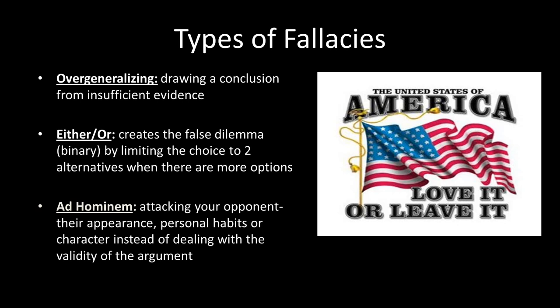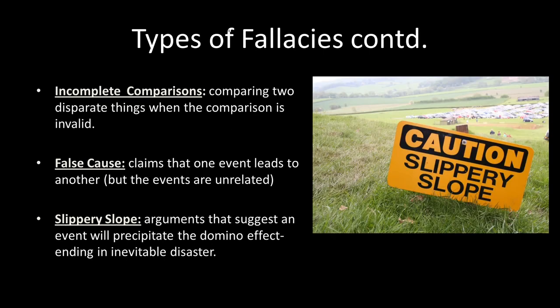The ad hominem fallacy — Latin for 'against the man' — means that instead of attacking your opponent's ideas, you attack them directly, targeting something about the person rather than the validity of their argument. The fallacy of incomplete comparison involves comparing two disparate things when the comparison is invalid, making a false metaphor. The fallacy from false cause claims that one event leads to another with no actual link between them — if this happens, that follows — with no explanation for why.